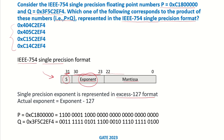So whatever exponent is given, we have to subtract 127 from it to get the actual exponent. These two floating point numbers in IEEE 754 format have been given to us.